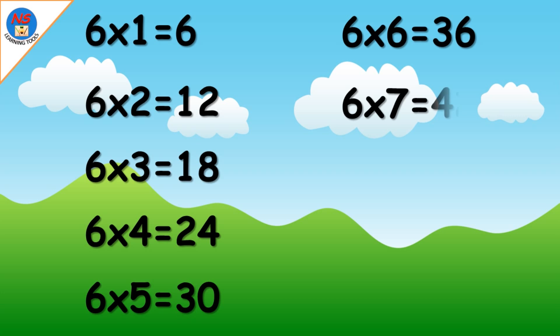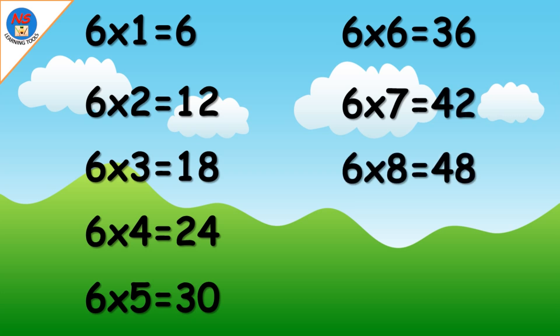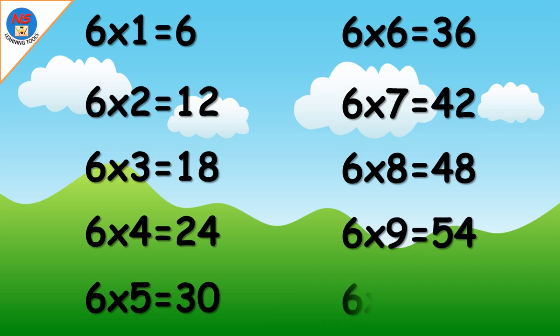Six sevens are forty-two. Six eights are forty-eight. Six nines are fifty-four. Six tens are sixty.